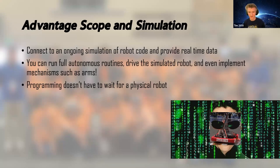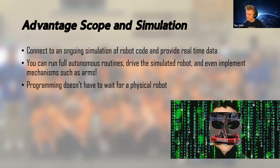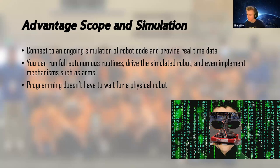My favorite part about AdvantageScope is the simulation you can do with it. WPILib already lets you simulate your robot, and AdvantageScope allows you to open that simulation in their software. You can run full autonomouses in simulation, drive the simulated robot, and even implement mechanisms like arms. A lot of times what holds programming back is that you need to wait for the robot — especially since mechanical usually takes a while. This is super revolutionary because you can be working on autonomouses and arm positions while the robot is being built, allowing you to have your code ready much faster once the robot is handed to you.